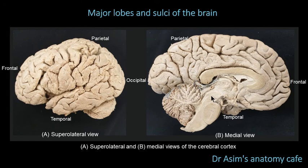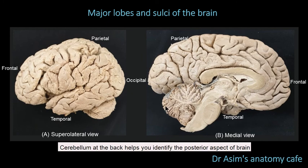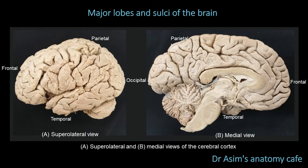You can see the cerebral cortex at the top and the brainstem hanging down with the cerebellum at the back. The cerebellum at the back gives you a clue that this is the posterior side and that is the anterior side. Similarly, we can see the cerebellum here at the back end. On the left we're looking at the supralateral view of the left cerebral cortex, and on the right the medial view of the left cerebral cortex — a midline sagittal section with the right hemisphere removed.